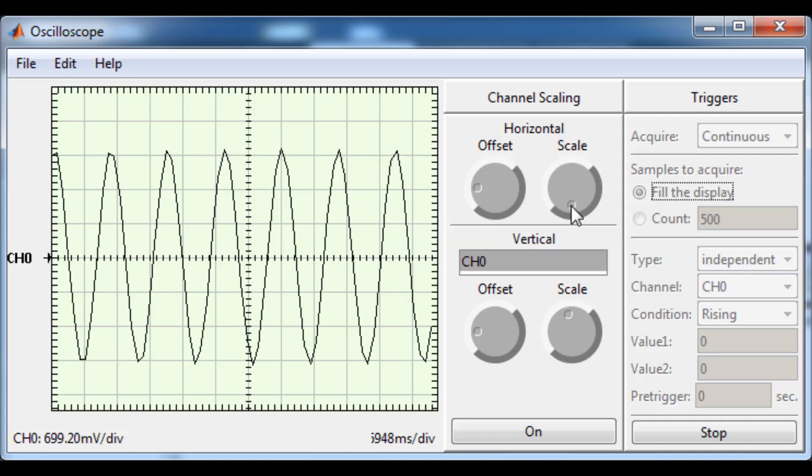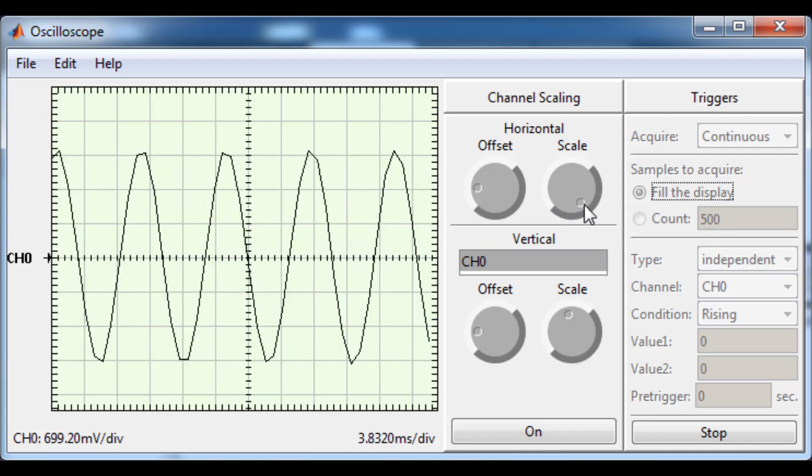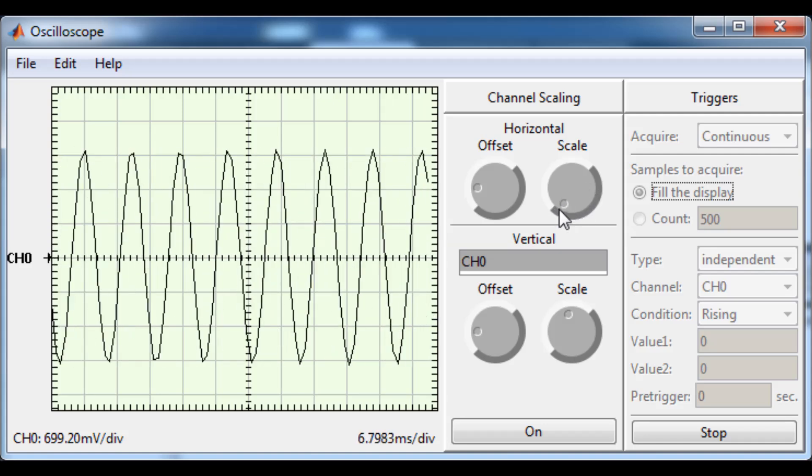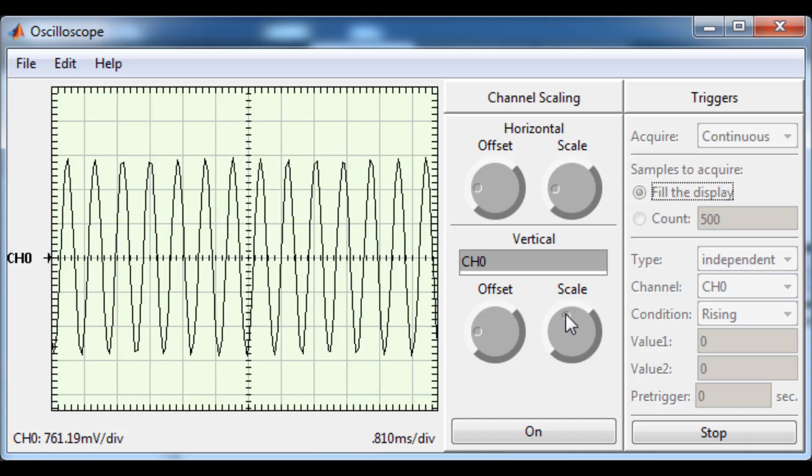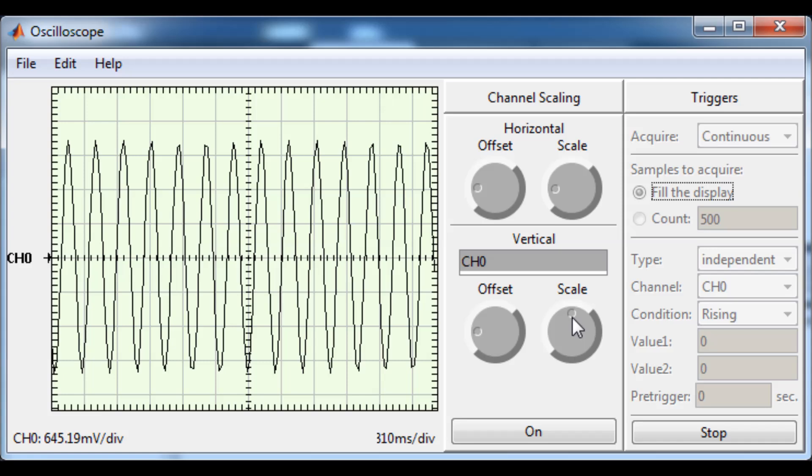I can also change some of the scales here for example if I change the horizontal scale I can see either more or less data and I can also change the vertical scale to make my trace either bigger or smaller.